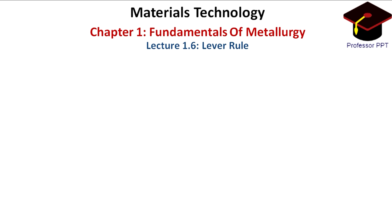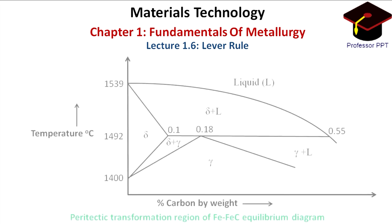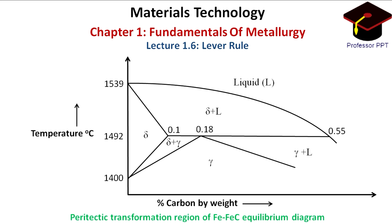Let us consider the peritectic transformation region of iron-iron carbide diagram to understand the lever rule. It is possible to calculate the exact percentage of delta ferrite and liquid at 0.18% of carbon and 1492 degree Celsius constant temperature by applying lever rule.